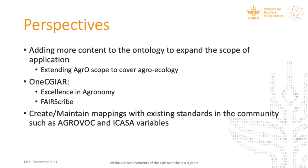In terms of perspectives, we will continue adding more terms to the agronomy ontology — particularly more terms related to agroecology in the near future. The agronomy ontology will also be used in the context of One CGIAR, particularly by the Excellence in Agronomy initiative and by the Fairscribe tool. We are also planning to create and maintain mappings between the agronomy ontology and existing widely used standards such as AgroVoc or ECASA variables, as well as data dictionaries produced by other projects, to ensure data interoperability. I now hand over to Sunho for the SEONT presentation.